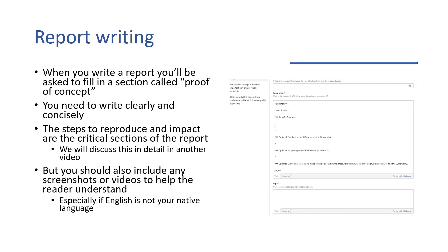And this is going to be super brief, but report writing. When you write a report, you'll be asked to fill in a section called proof of concept, which is a free-text section. You need to write clearly and concisely — the person who reads this may not actually be technical and may not live in your world of technical things. The steps to reproduce and the impact are the critical sections of the report — they really are the most important. I'm going to go into detail about report writing and especially impact in a future video, because impact is so, so under talked about. You should also include any screenshots or videos to help the reader understand, especially if English isn't your native language — a picture tells a thousand words.